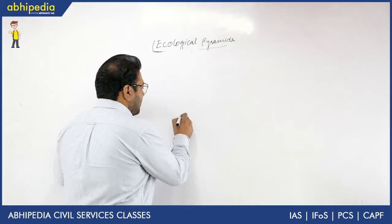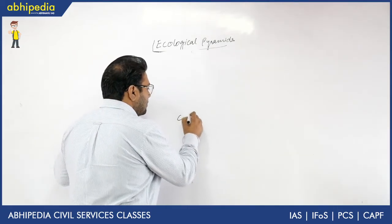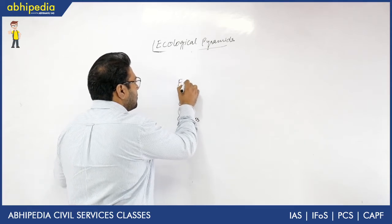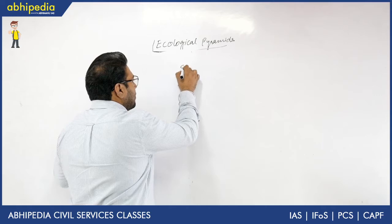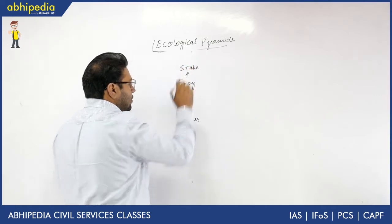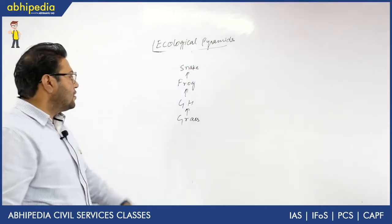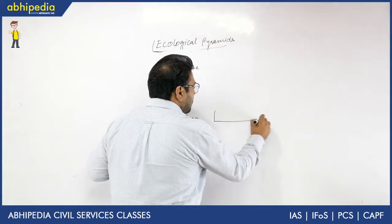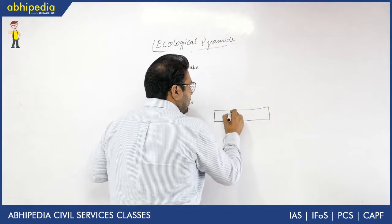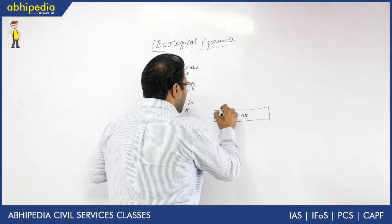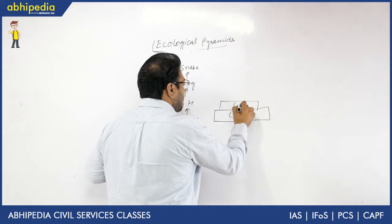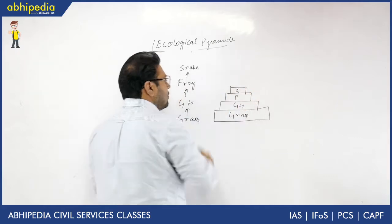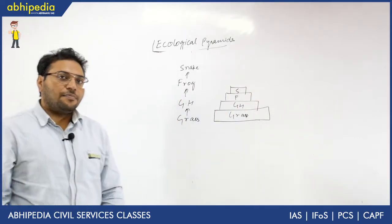Here I am going to create a food chain: Grass → Grasshopper → Frog → Snake. This is a food chain. Now I am going to represent this in the form of a graph, with grass at the base, then grasshopper, then frog, then snake at the top. This is an ecological pyramid.